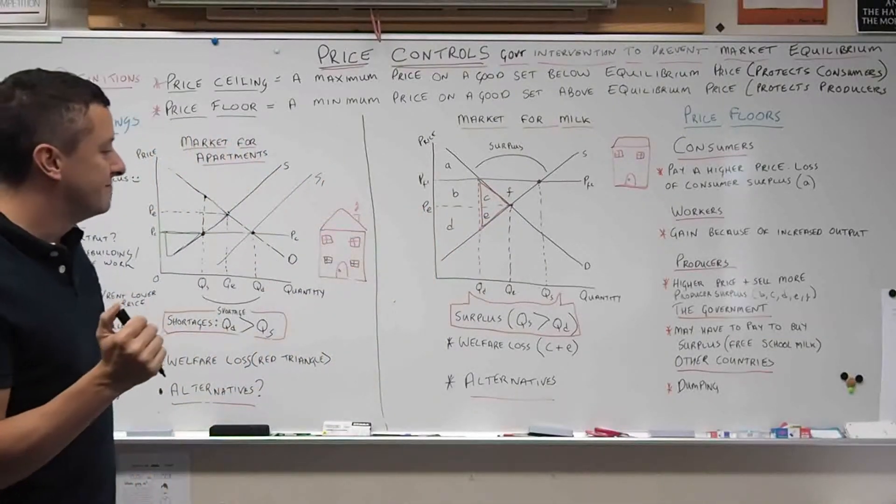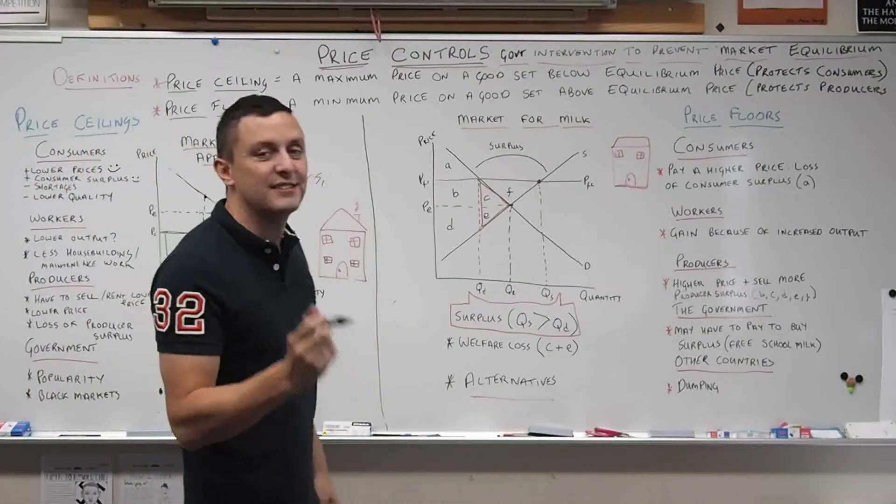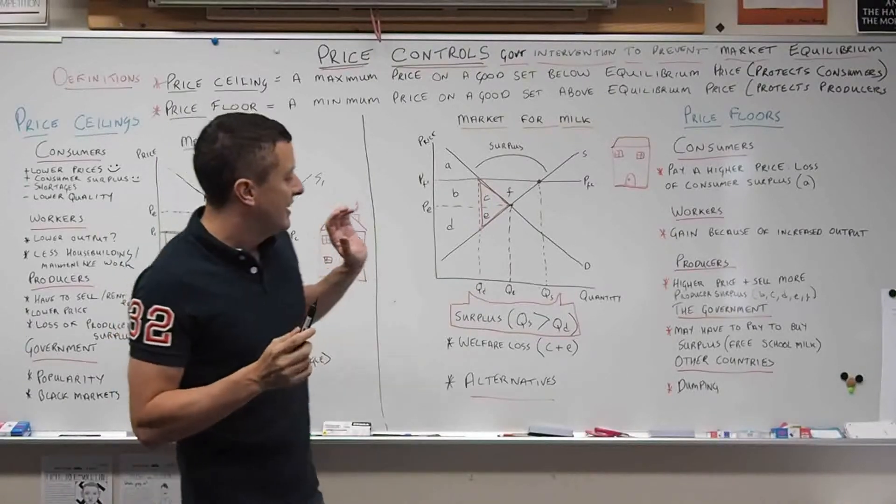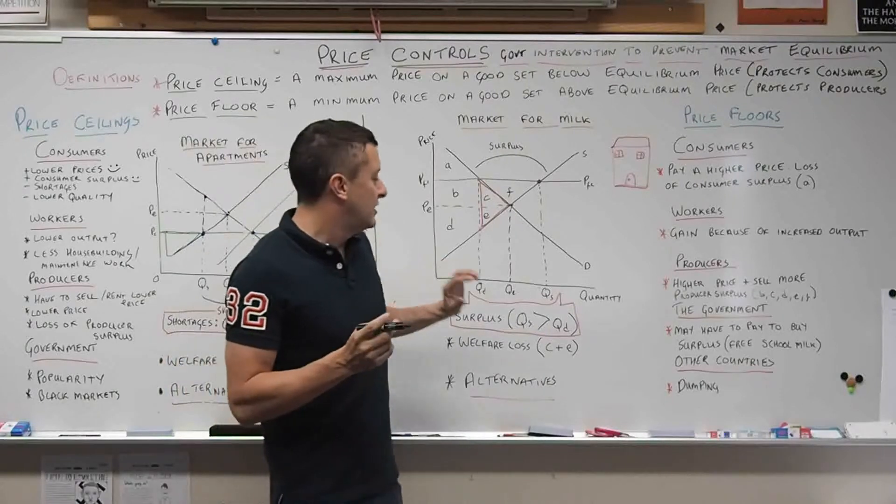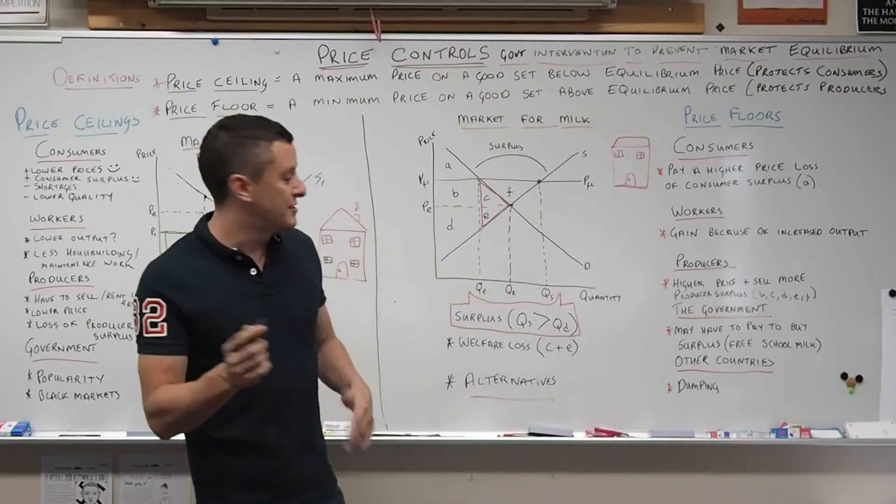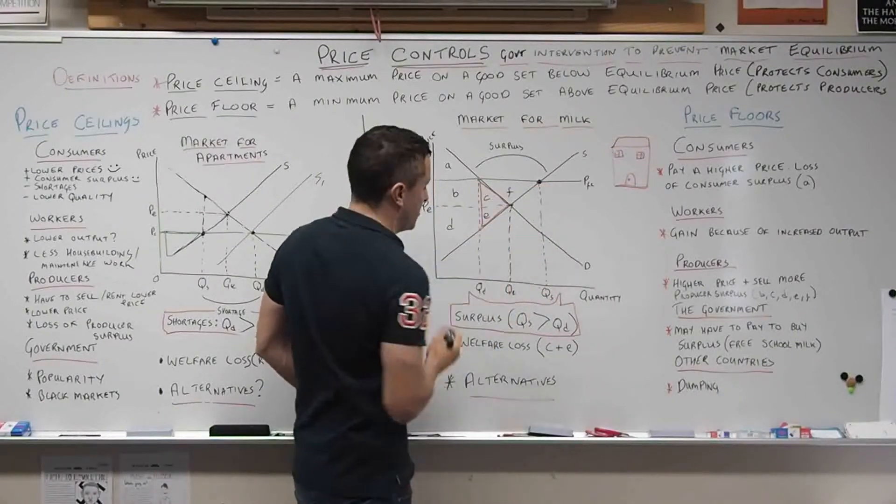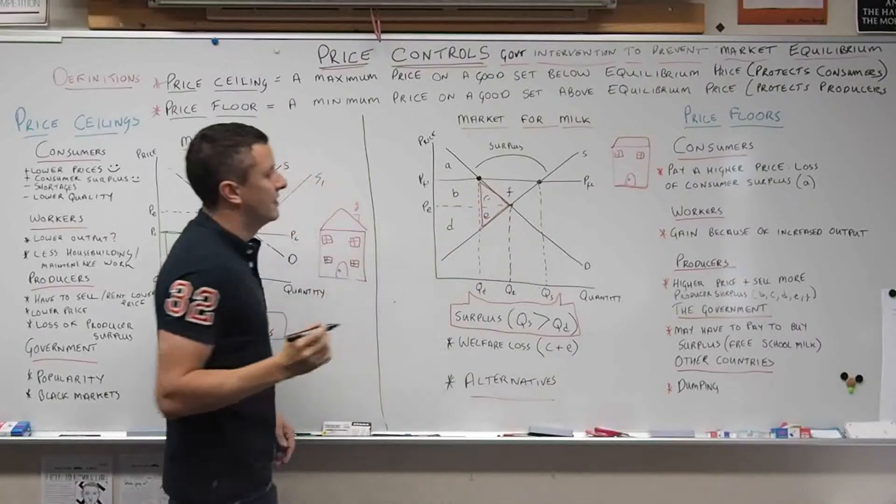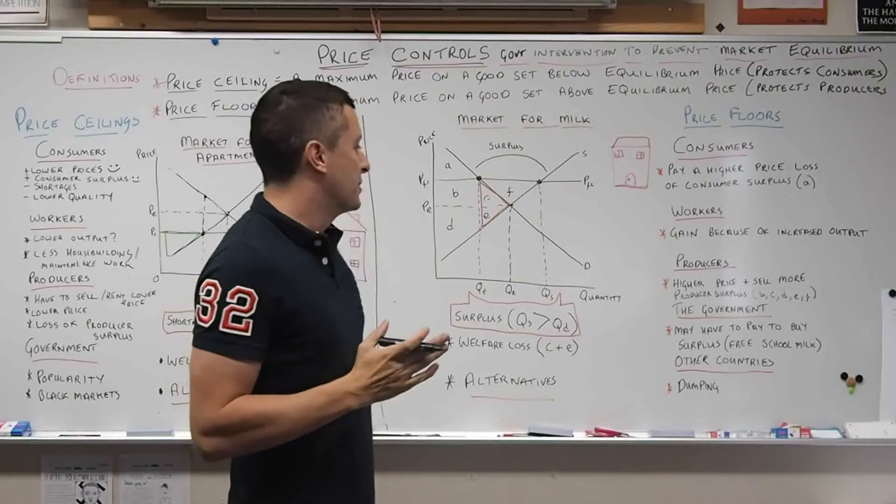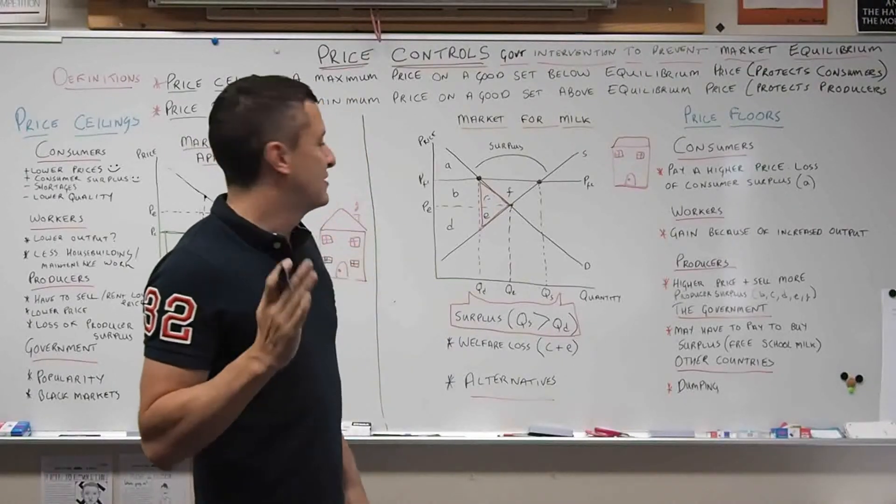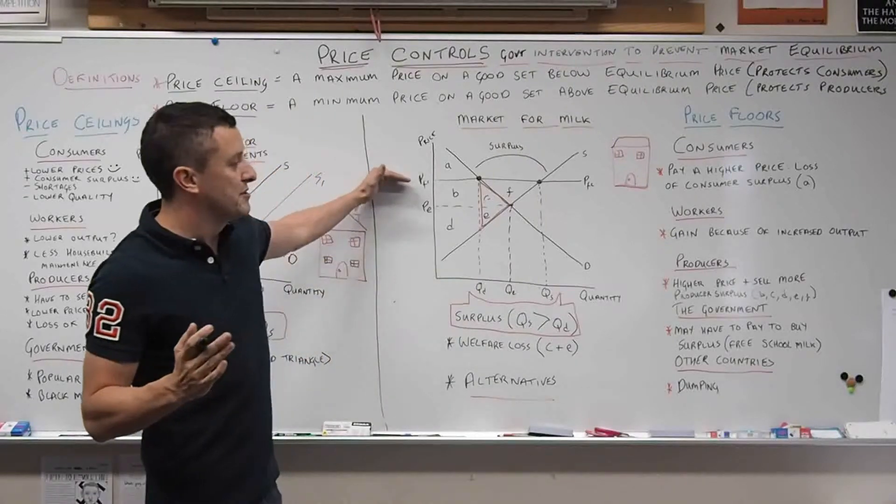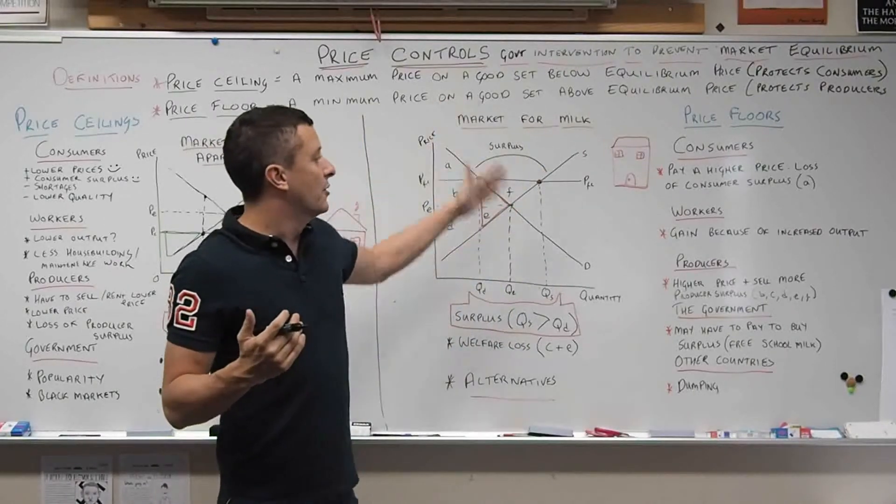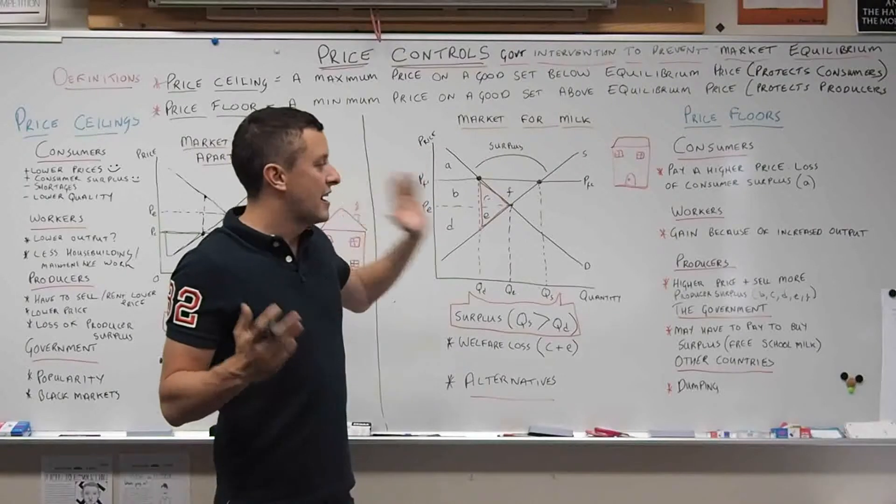However, the problem with this is, much like price ceilings, it creates a huge surplus. A surplus is when the quantity supplied here is much greater than the quantity demanded here. This is a problem because what do you do with that surplus? Although the producer surplus has increased and producers are happy, what are they going to do with all that extra milk or other agricultural products they have left over?